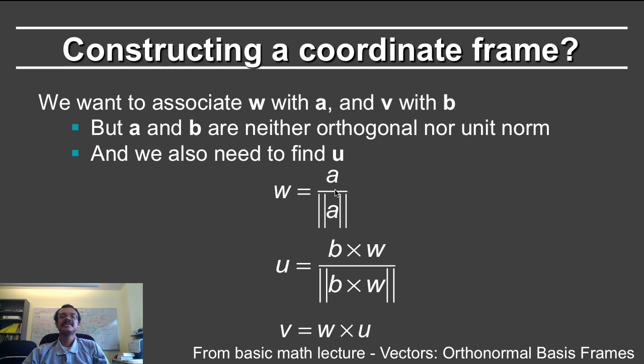You have to remove the components of b which fall along w. And instead of doing that explicitly, a more elegant way is to find the u vector, which is b cross w. The cross product automatically removes the appropriate components.